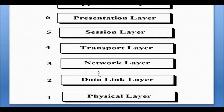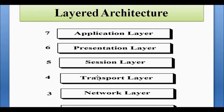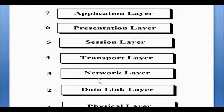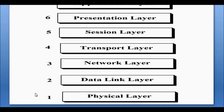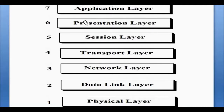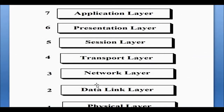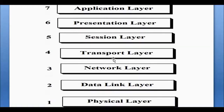The network model operates on the principle of layered architecture and it consists of basically seven layers. The entire network model actually consists of seven layers: starting from the bottom, the physical layer, then the data link layer, the network layer, the transport layer, the session layer, the presentation layer, and the application layer. We will discuss each of these layers in detail in a separate video. For now, understand that the network model has seven layers associated with each device and data has to be passed and processed through each of these seven layers.